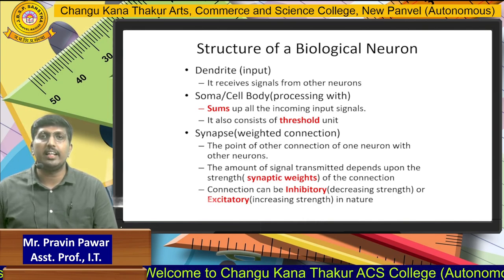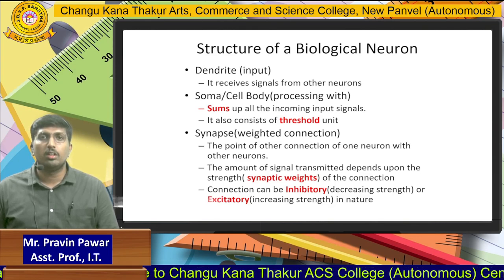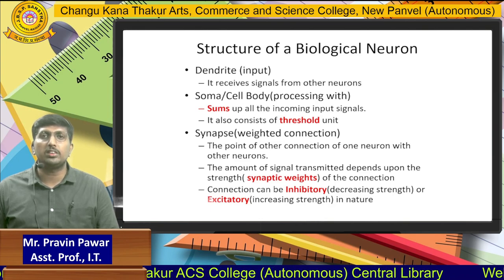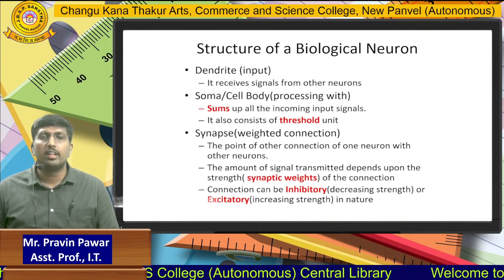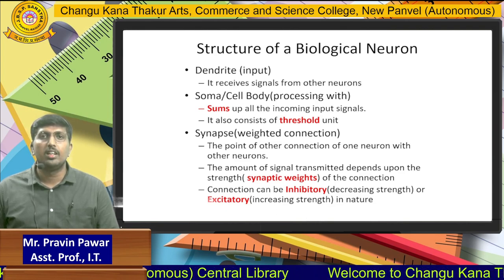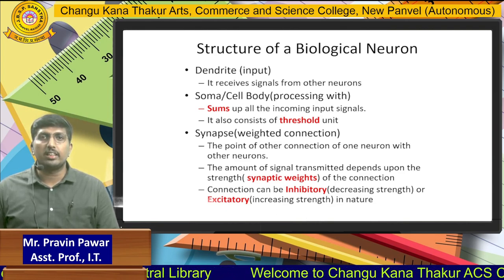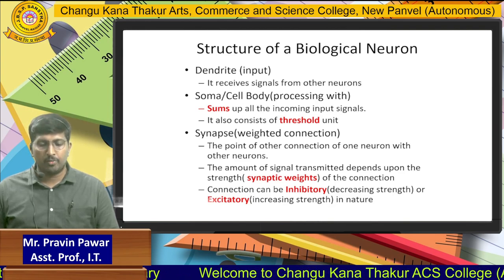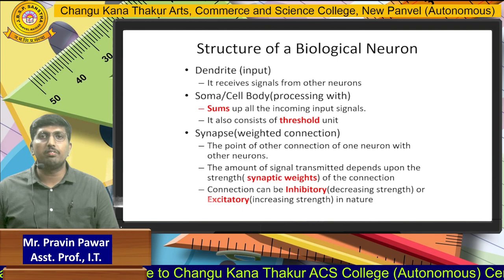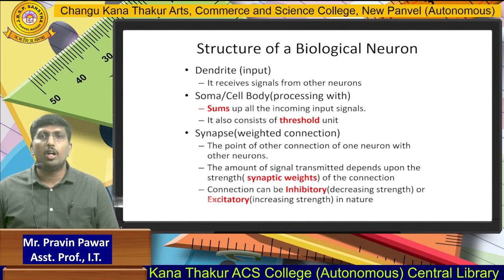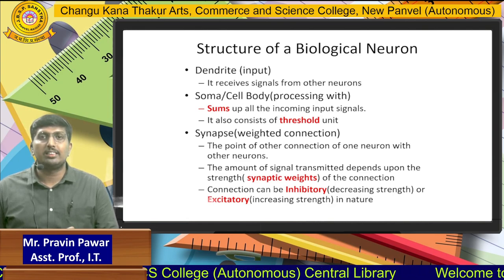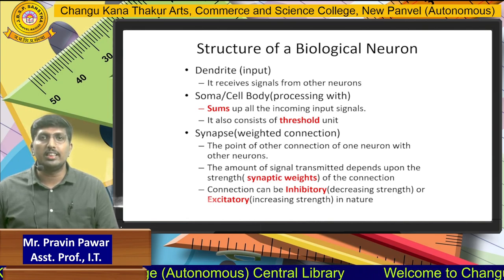The synapse is the weighted connection — it determines how much data is being transmitted and how much time is required for the transmission. These are points connected to each other, using signals to transmit data depending on the strength of that particular connection. That strength of the connection is also known as the synaptic weights.